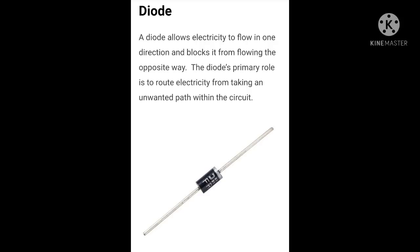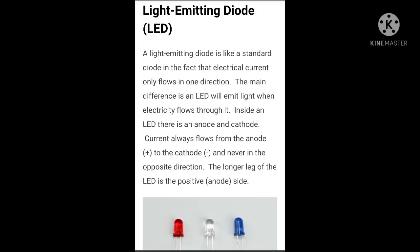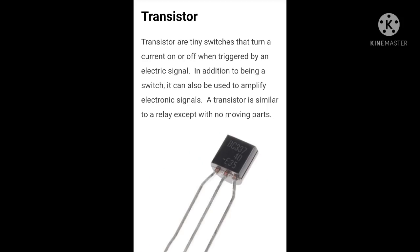Next I will cover diodes. A diode allows electricity to flow in one direction and blocks it from flowing in the opposite direction. Light emitting diode — a light emitting diode is like a standard diode in that the electrical current only flows in one direction, and it comes in many colorful varieties.